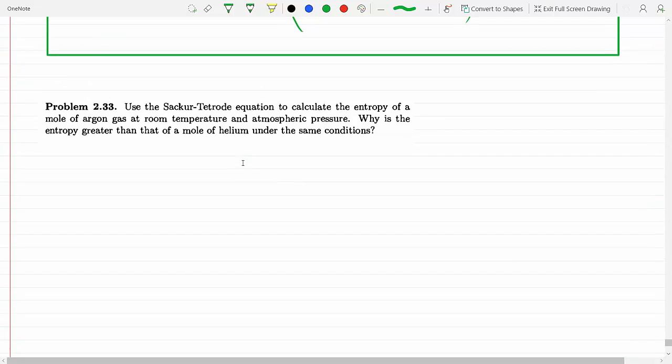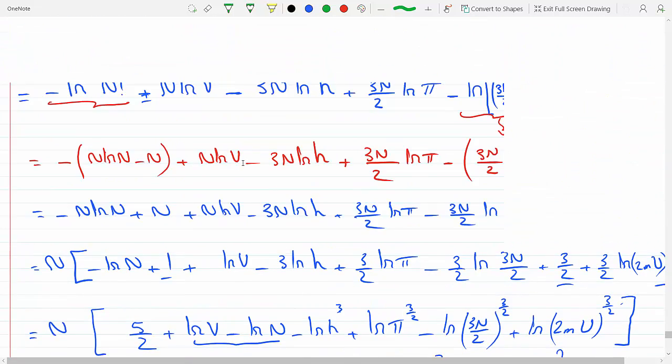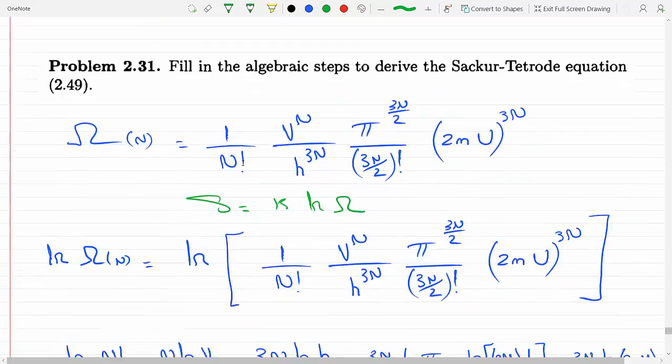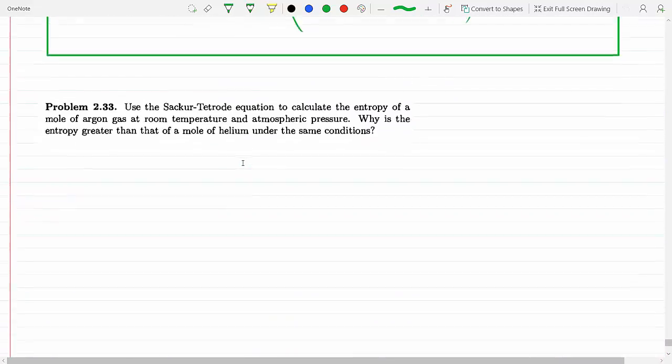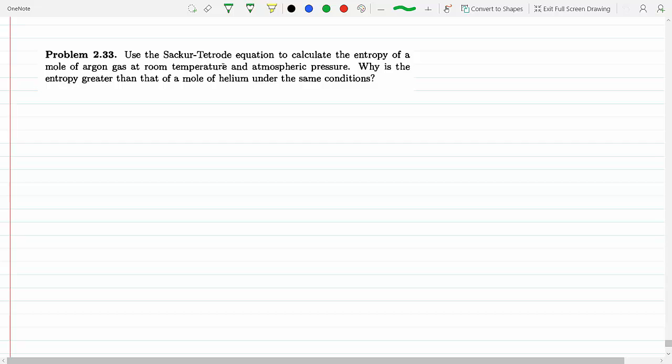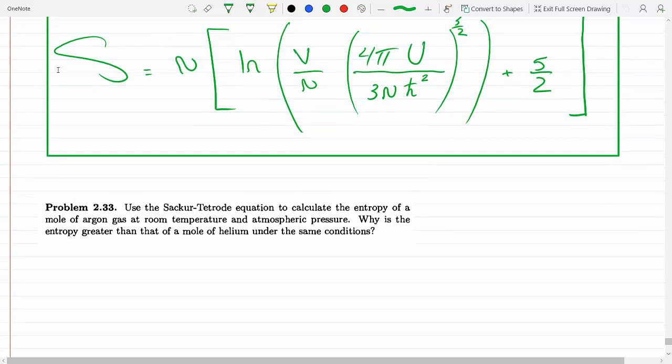After we derived the Sackur-Tetrode equation in problem 2.31, this question asks to use it to find the entropy of 1 mole of argon gas at room temperature and atmospheric pressure.